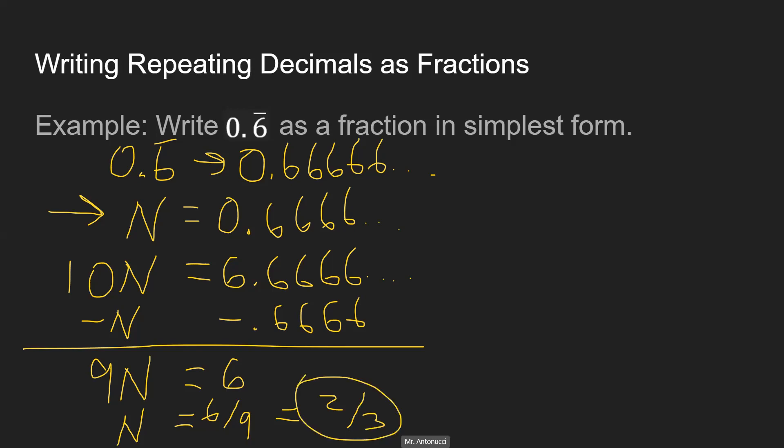And you could check that on a calculator. Two-thirds, if you divide it out on a calculator, is 0.6 repeating. And you might have already known that. But you can do the same process with repeating decimals that you don't know off by heart.